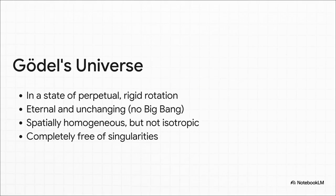So what did this place look like? Well, for starters, forget the Big Bang. This universe has always existed and always will. It's eternal. And while it's basically the same everywhere you go, it's not the same in every direction. Why? Because the entire cosmos is spinning. The whole thing. Like a colossal cosmic record player. And get this. No singularities. No Big Bang crunch. No black holes. It's weirdly stable.